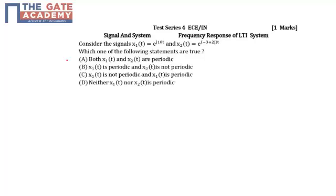The question is: consider the signals x₁(t) = e^(j10t) and x₂(t) = e^((-3+2j)t). Which one of the following statements are true?